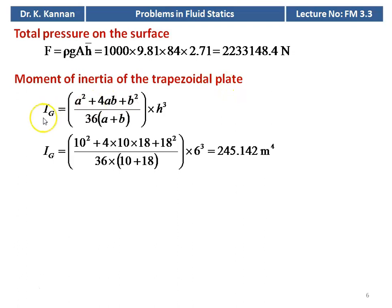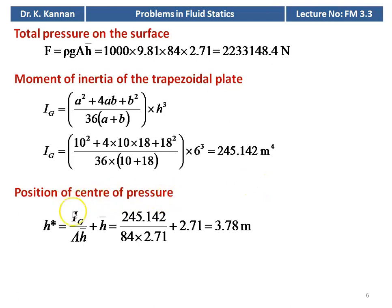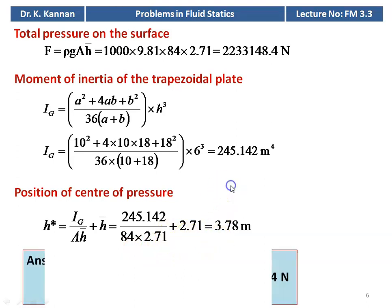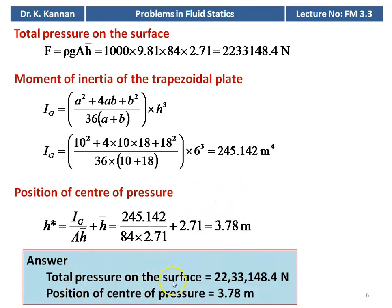The moment of inertia of the trapezoidal plate I_g equal to (a squared + 4ab + b squared) divided by 36 into (a + b) into h to the power 3. Substituting numerical values: 10 squared plus 4 into 10 into 18 plus 18 squared divided by 36 into 10 plus 18 into 6 to the power 3 equal to 245.142 meter to the power 4. The position of the center of pressure h* equal to I_g by A h_bar plus h_bar equal to 245.142 divided by 84 into 2.71 plus 2.71 equal to 3.78 meter. Total pressure on the surface is 22,33,148.4 Newton and the position of the center of pressure 3.78 meter.